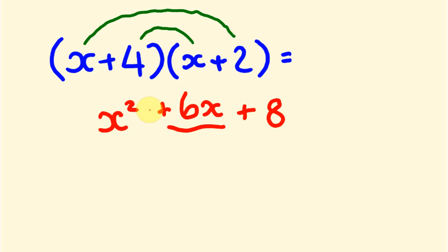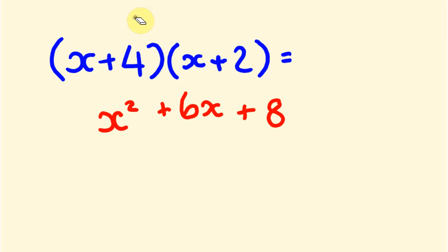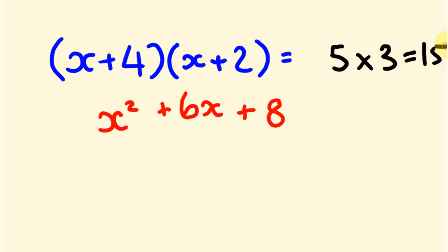You'll probably take a slightly different way of doing these when you first start out. But I also said I'm going to show you how you can check your answer fairly quickly, without having to substitute huge values. The first thing — just consider that we're going to call x equals 1. So 1 plus 4 is 5, and we're going to multiply this by 1 plus 2, which is 3. So the answer is 15. We can check our answer: if x is 1, x squared becomes 1, 6 times 1 is 6, and we add that to 8. So 1 plus 6 is 7, plus 8 is 15. So we've checked our answer.